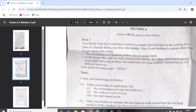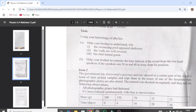The swimming pool appeared shallower than the actual depth. In the theater, the walls are well covered with curtains. His yellow shirt turned green in the green light, and at his position the sound from the loudspeakers reached him at two different intervals. The hint says the sound in air is 320 meters per second. The learner has to use the knowledge of physics to help the brother understand.